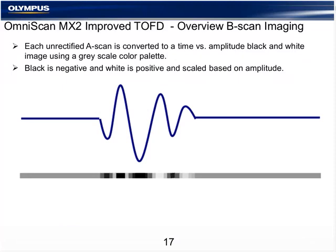The TOFD B-scan imaging uses an unrectified A-scan and converts time and amplitude to a black and white image. Black is negative in the grayscale, white is positive, and it's scaled in intensity based on amplitude. Every one millimeter of travel of the scanner generates one line in the B-scan that is a representation of the A-scan waveform.